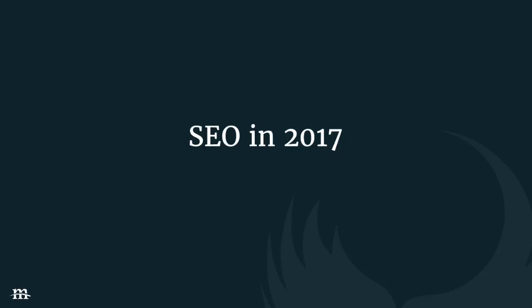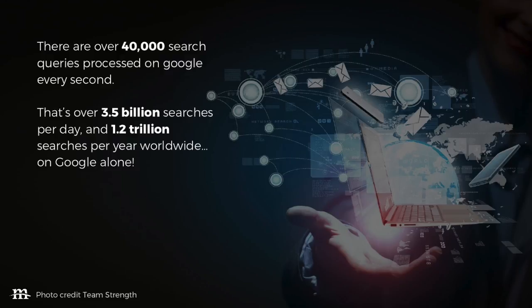SEO in 2017. There's obviously a ton to talk about when it comes to search engine optimization and we've only got 25 minutes today. So we're going to keep it as concrete as possible and give you some key takeaways. Every day on Google, there are over 40,000 search queries a second. That translates to 3.5 billion a day or 1.2 trillion a year, and that's just on Google alone.